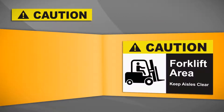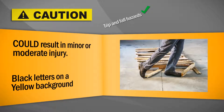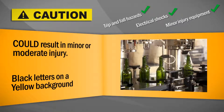Caution is used for hazard labeling as well, but only hazards which could result in minor or moderate injury. Caution signs are reserved for less serious hazards like trip and fall hazards, non-life-threatening electrical shocks, and equipment that may cause minor injury.